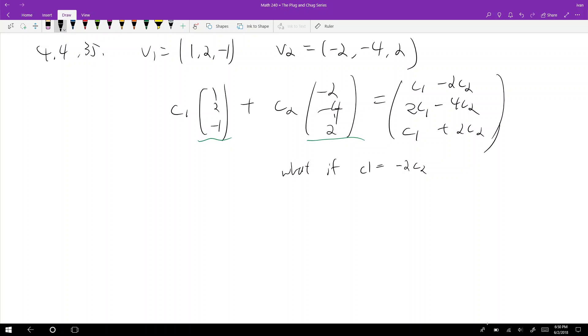Which means that you don't need to do this. The span is actually just—the span of v1, v2 is actually just the span of one of them. So you can either choose c1 times (1, 2, -1) or c2 times the other vector, it doesn't matter. But this is actually going to be the span.